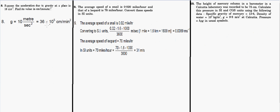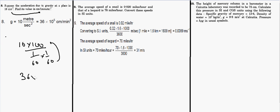For unit conversion of acceleration due to gravity: given g = 10 m/s², convert to cm/min². Multiply meters by 100 to get centimeters, and convert seconds to minutes by dividing by 60 (squared). The result is 36 × 10⁵ cm/min².